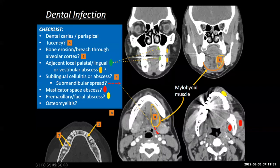There are premaxillary and facial tissues that need to be inspected. Right in front of and superior to the lip, there's the canine space — a space that runs deep to the facial musculature and superficial to the maxilla, extending all the way up to the orbit. That's the route of spread of anterior maxillary dental infections to the orbit. Finally, make sure you look at the bones in bone window for any signs of osteomyelitis.